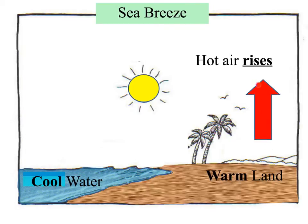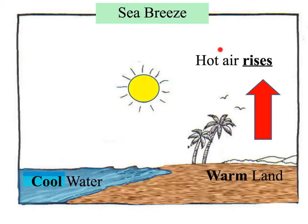Warm air rises. Cool air comes in and takes its place. It gets warmed up by conduction because it's touching the warm ground, then it begins to rise. We have a circulation — this is convection. It continues rising, goes out, begins to cool off, and sinks back down towards the water. This is what causes the wind.